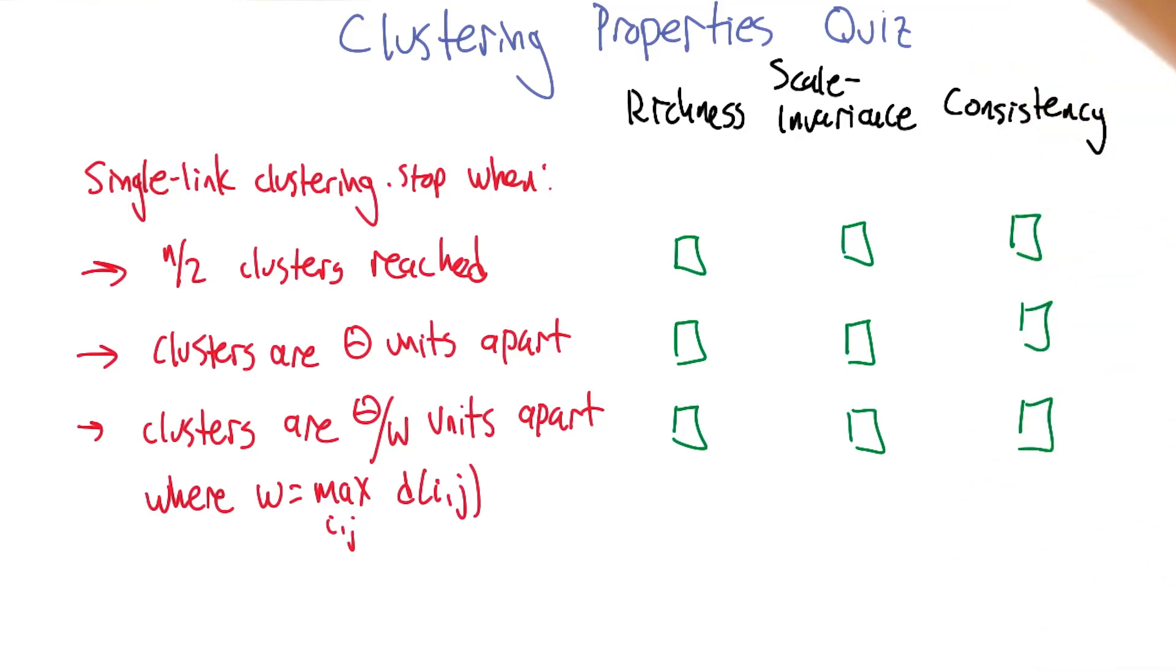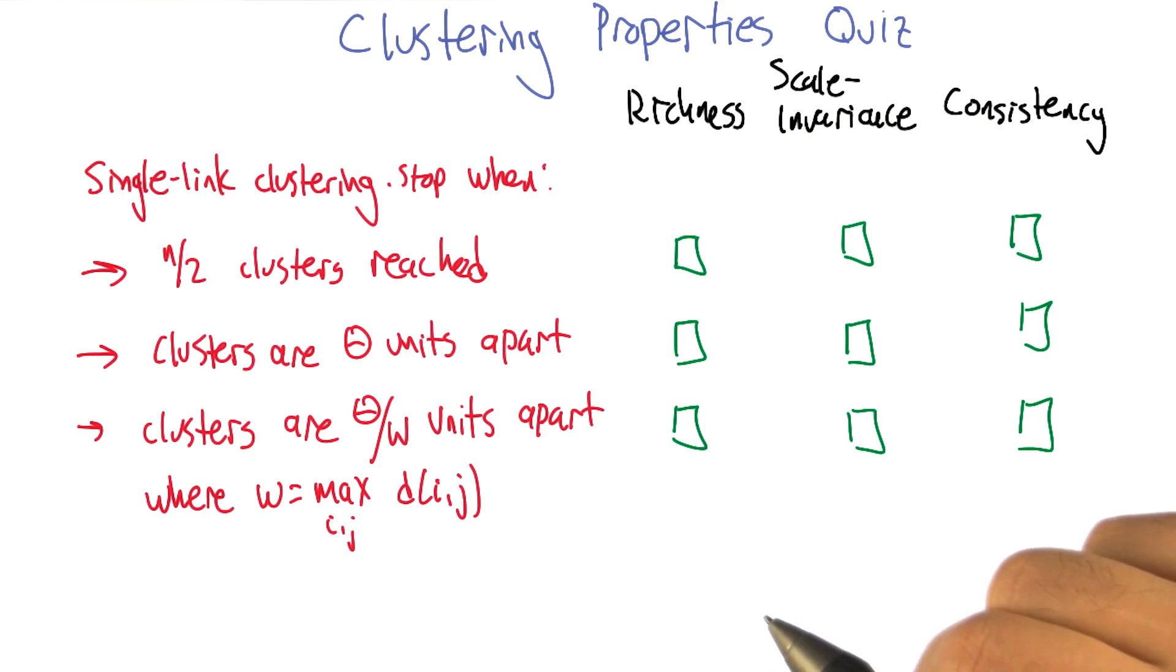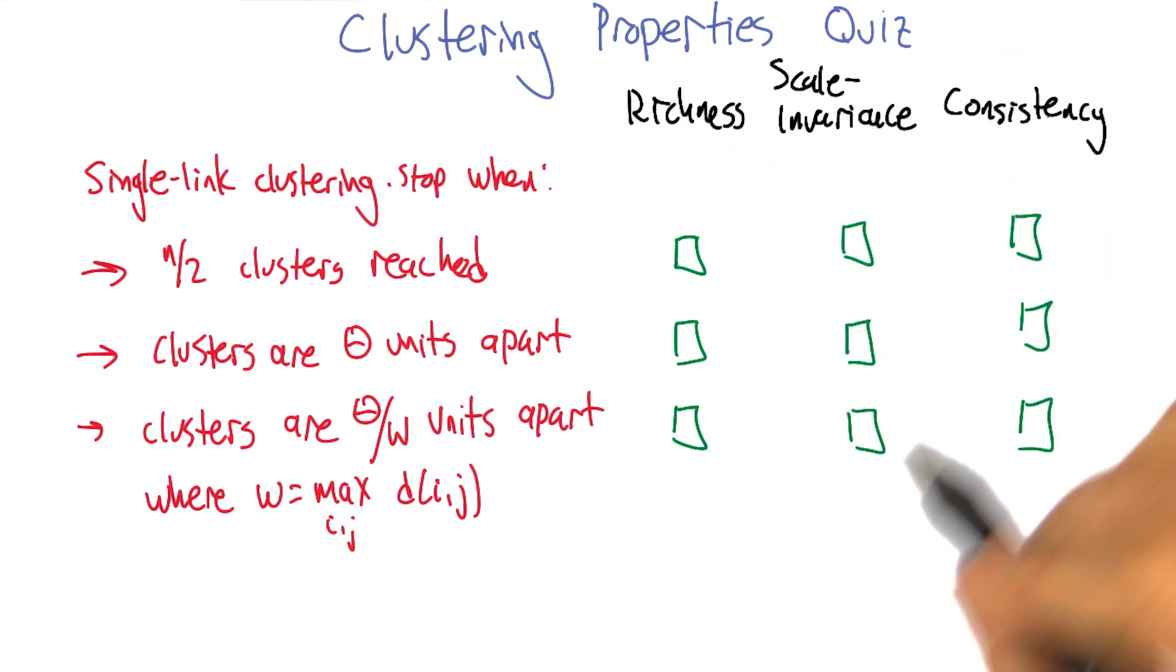And we'll do that with a clustering properties quiz. All right, so what I'm going to do is give you three different clustering algorithms. For each one, ask whether it has these properties. Does it have richness? Does it have scale invariance? Does it have consistency?